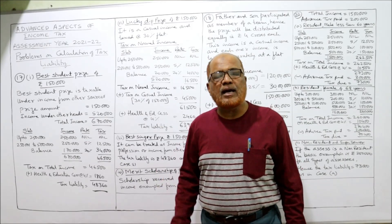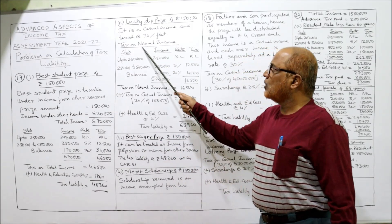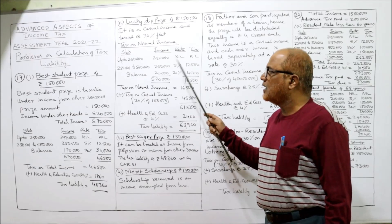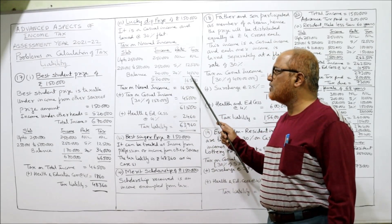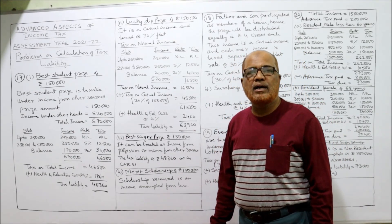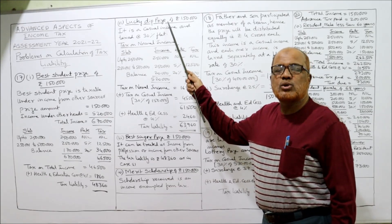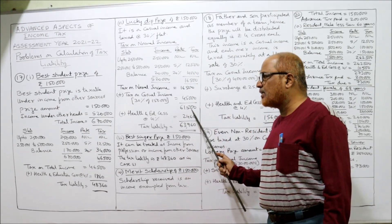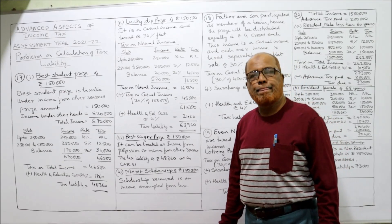First, calculate tax on normal income of five lakh twenty thousand using slab rates: up to two lakh fifty thousand nil; two lakh fifty thousand to five lakh at 5% — twelve thousand five hundred; balance twenty thousand at 20% — four thousand. Total tax on normal income: sixteen thousand five hundred. The lucky dip prize is casual income taxed at 30%: thirty percent of one lakh fifty thousand is forty-five thousand. Total sixty-one thousand five hundred, plus 4% cess — tax liability sixty-three thousand nine hundred sixty.